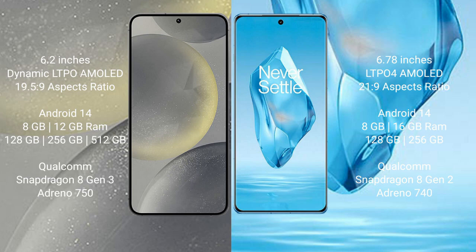Samsung Galaxy S24 comes with 8GB or 12GB RAM, 128GB or 256GB internal storage, a Qualcomm Snapdragon 8 Gen 3 processor, and an Adreno 750 GPU.